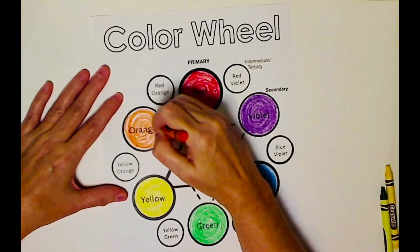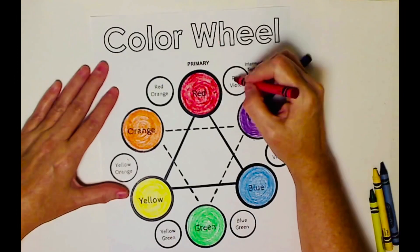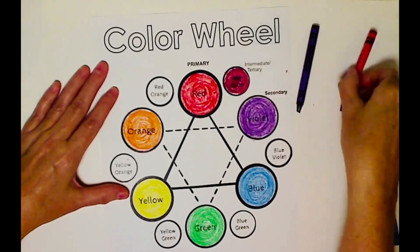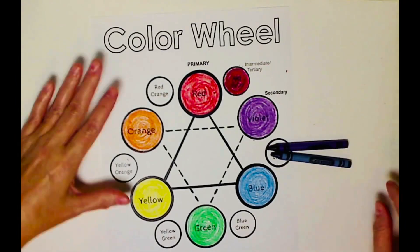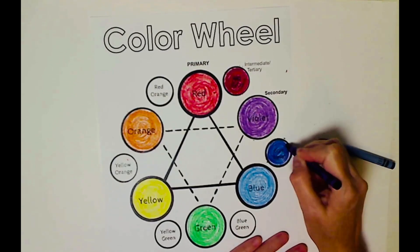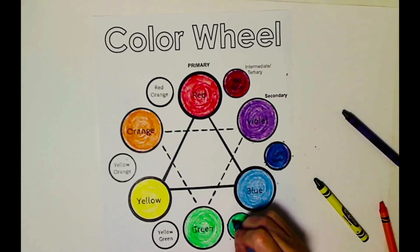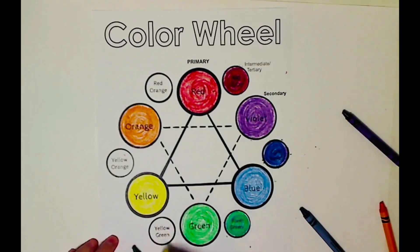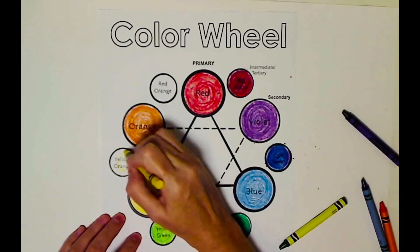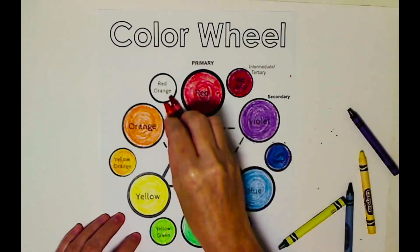Now we switch to the tertiary or intermediate colors, and they're in the middle between the two parents. If you have red and violet next to them, start off coloring the lighter color first — not necessarily the primary color first — so that it absorbs into the paper better. The one we just did was between red and violet, so that is red-violet. This one is between violet and blue — but remember, the primary name goes first, so it is blue-violet. And then we have blue-green, yellow-green, yellow-orange, and finally red-orange.